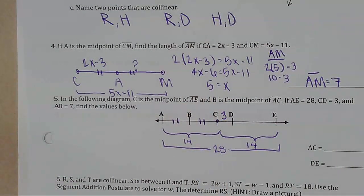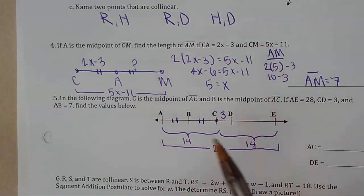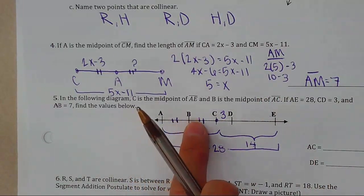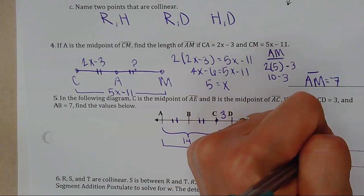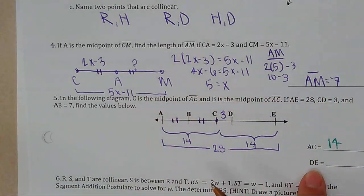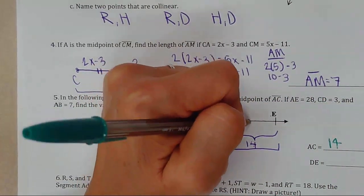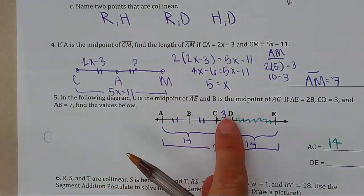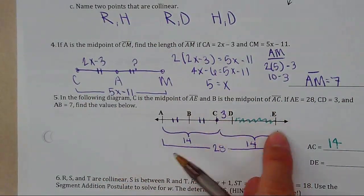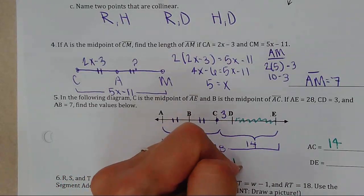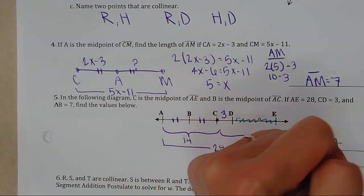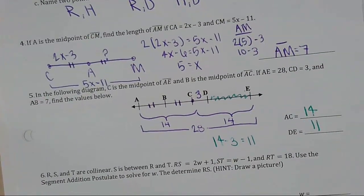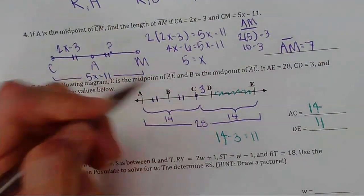To find DE: since CE is 14 and CD is 3, we do 14 minus 3 and get DE equals 11.